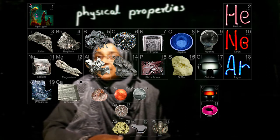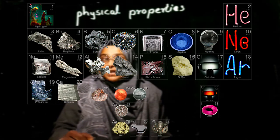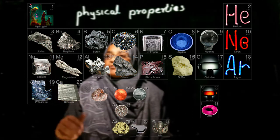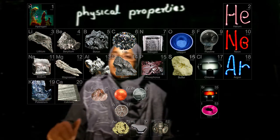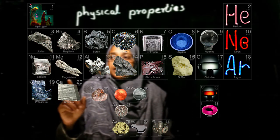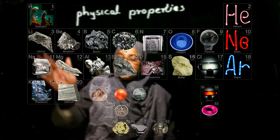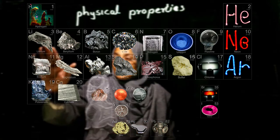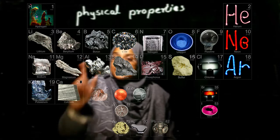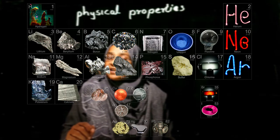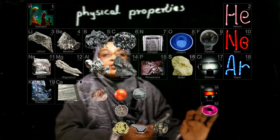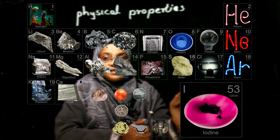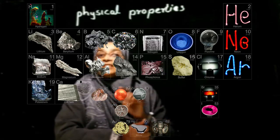Next, let us observe the appearance of metals and non-metals. All metals — whether in solid or liquid state — share a common property in appearance: they are all shiny. This property is called metallic lustre. Most non-metals do not show lustre; they are dull. However, iodine and graphite do have the lustre property.